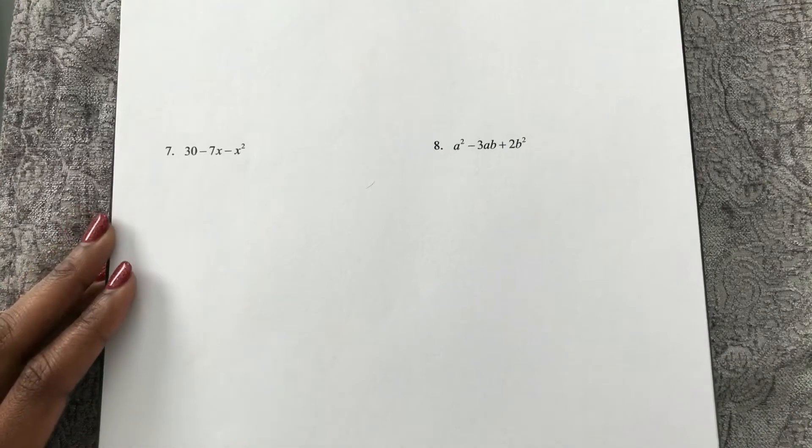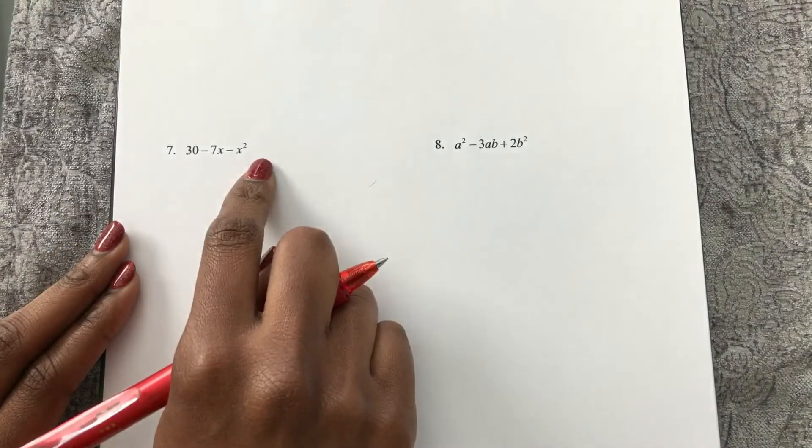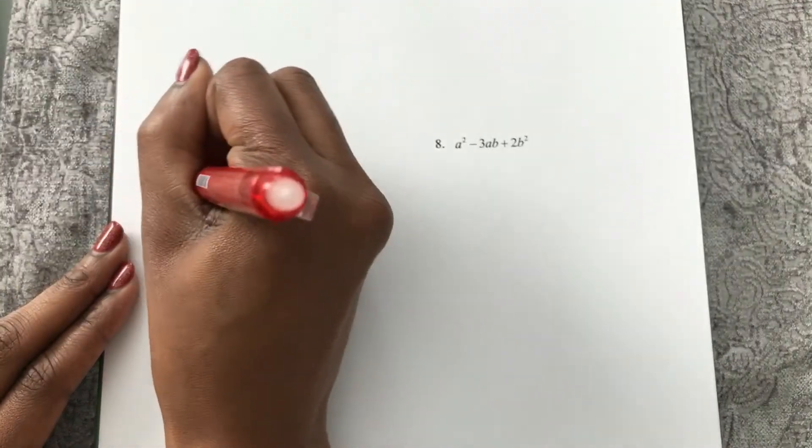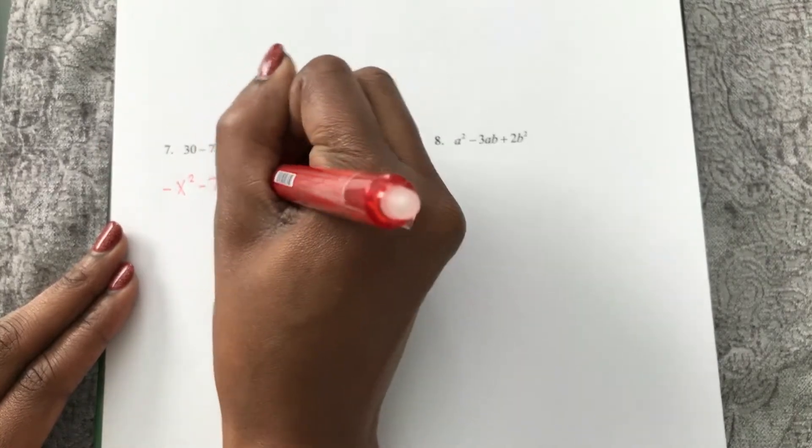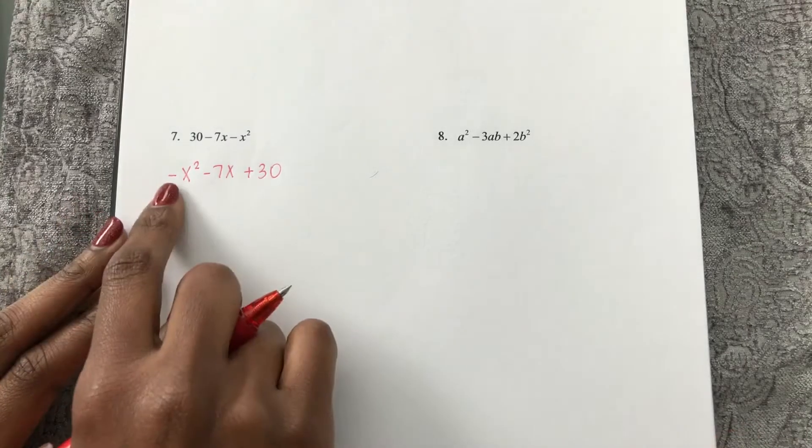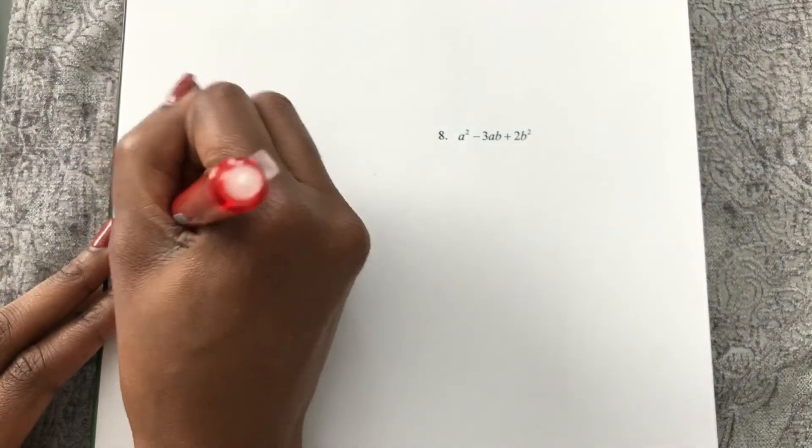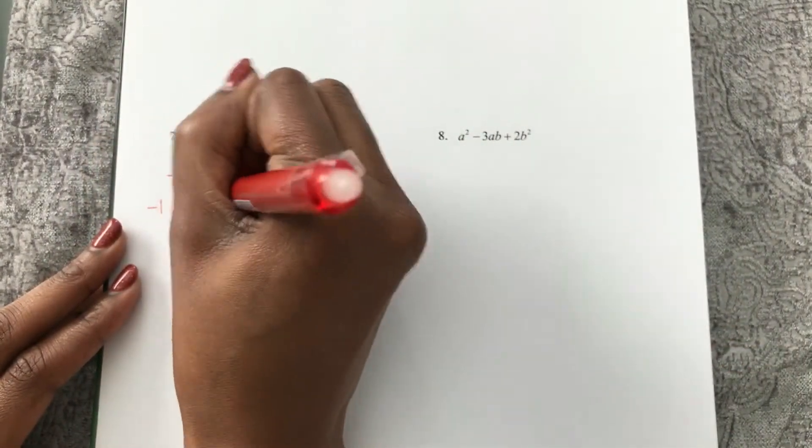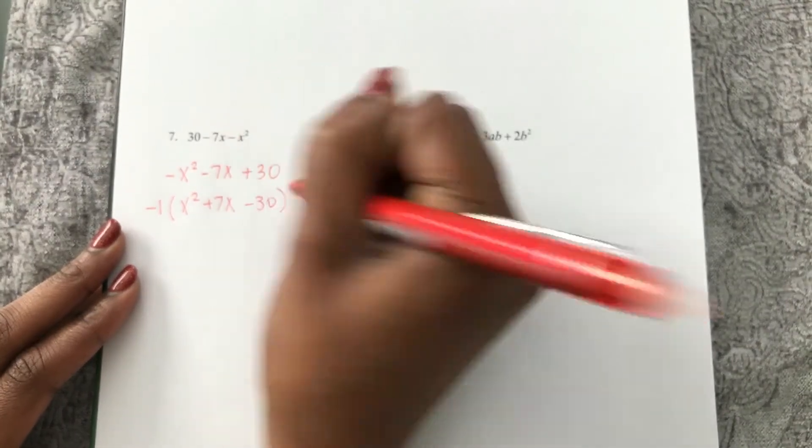Moving on to number 7, the first issue that I see is that it's not in standard form. Negative x squared minus 7x plus 30. So now that I have it in standard form, there's a leading coefficient that's negative. I'll factor that out. x squared plus 7x minus 30.